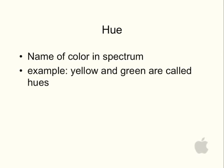Hue. That's the name of a color in the spectrum. So for example, yellow and green are called hues. Essentially, any color you can refer to as a hue.